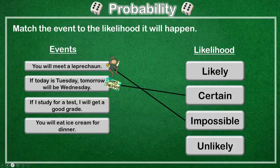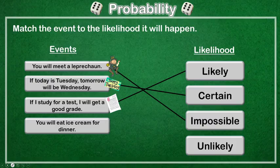The next one says: if I study for a test, I will get a good grade. That should happen — it's likely to happen. The last one says: you will eat ice cream for dinner. Could happen, but pretty unlikely.